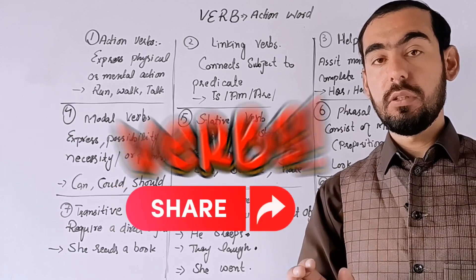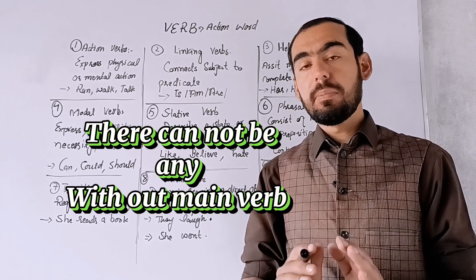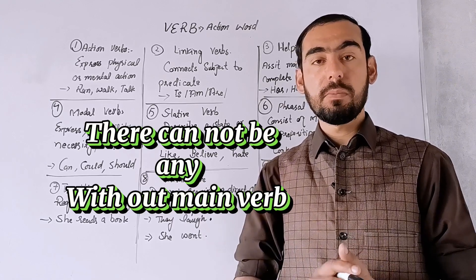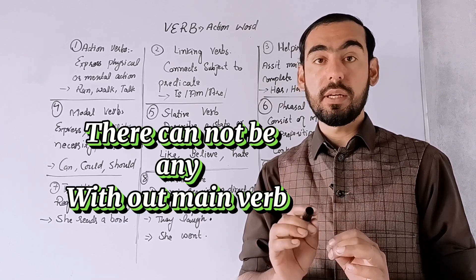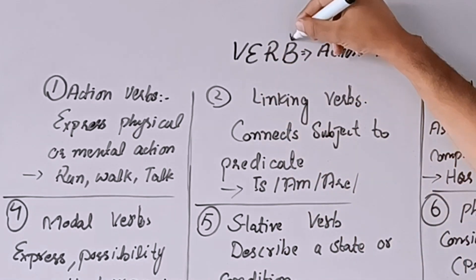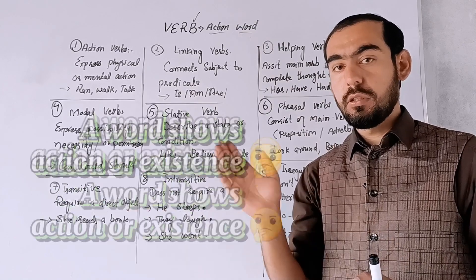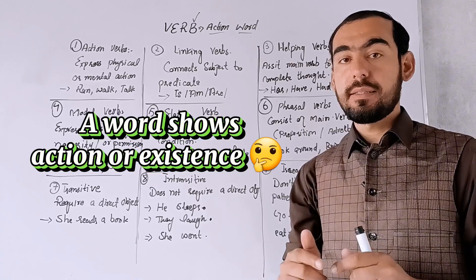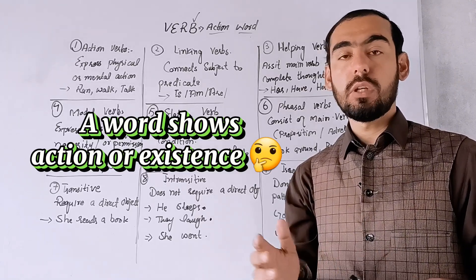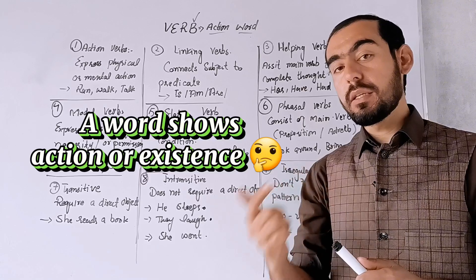Now keep in mind there cannot be any sentence without the main verb. یہ بات ذہن میں رکھیں کہ subject کے بغیر، object کے بغیر، helping verb یا کسی بھی part of speech کے بغیر sentence ہو سکتا ہے لیکن verb کے بغیر کوئی sentence نہیں ہو سکتا — یہ backbone ہوتا ہے۔ The simple definition of a verb is: an action word is called a verb. Second definition: a word that shows the action or existence of a subject is called a verb — جیسے اٹھنا، بیٹھنا، کھانا، پینا یہ سب action words یعنی verbs ہیں۔